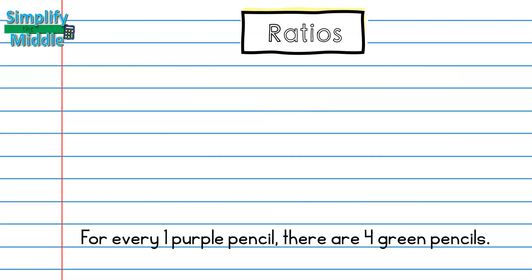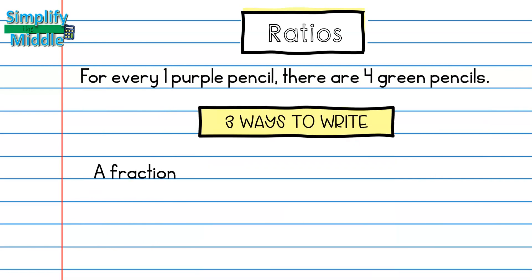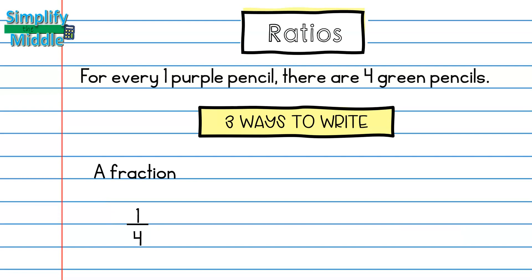Ratios can be written three different ways. We can write a ratio as a fraction. So in this case, 1 over 4. 1 is representing our numerator, which is purple, and 4 is our denominator, which is representing our green. Another way to write a ratio is using the word 'to'. So there are 1 to 4 purple to green pencils. The last way of writing a ratio is with a colon. We also say this as 'to'. So this is also 1 to 4.